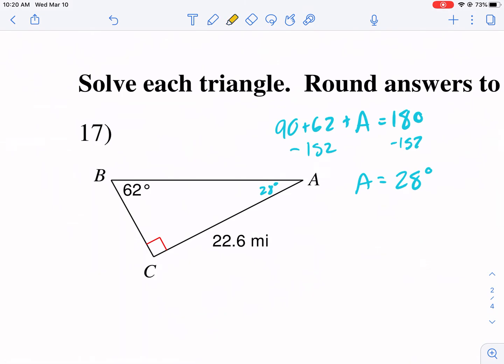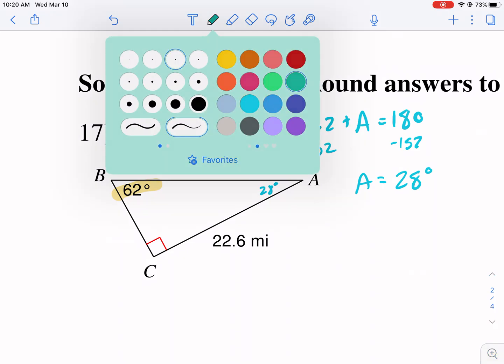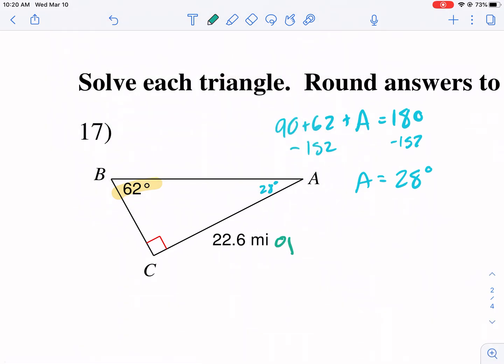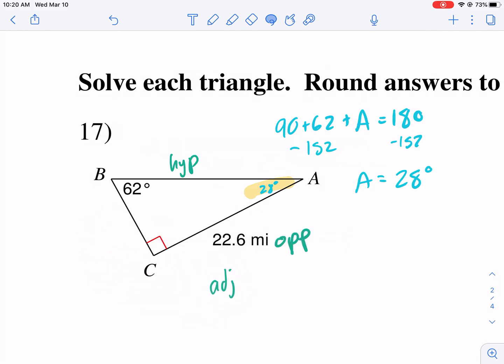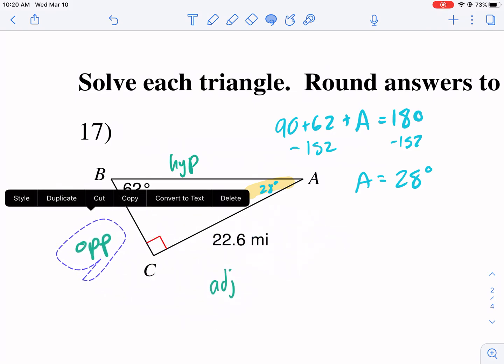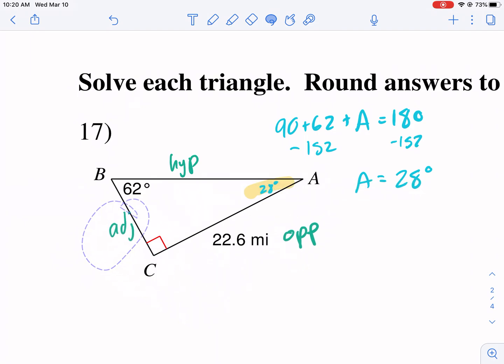So I know this is 28 degrees. Solving for a triangle means solving all the angles and all the sides. So technically, you don't have to use inverse trig to find the missing angle. Then we need to use trigonometry to order to solve for the missing sides. When you have options here, you can pick either 62 or 28. 62 is calling my name, so I'm going to label everything in regard to this being my reference. So I'm going to say, this is my opposite, this is my adjacent, and this is my hypotenuse.